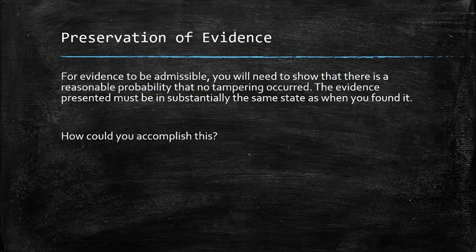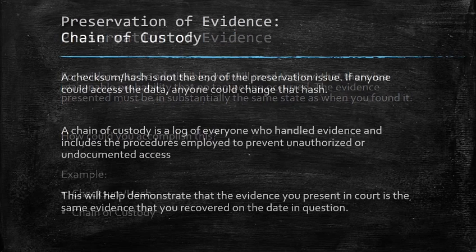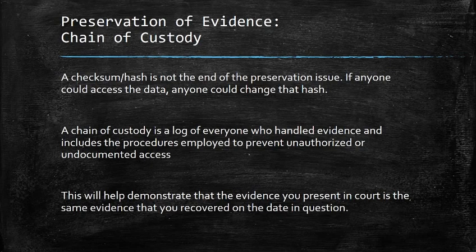Starting with preservation of evidence: in order for evidence to be admissible, you will need to show that there is a reasonable probability that no tampering occurred. The evidence presented must be in substantially the same state as when you found it. You could use things like a checksum or a hash to show that the integrity is still intact, but you're going to need to back that up with the chain of custody showing that that checksum or hash wasn't modified. The issue is making sure that no one can modify the original data in the first place.